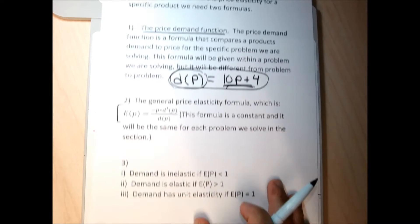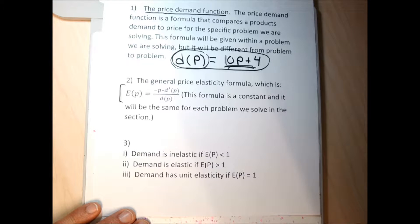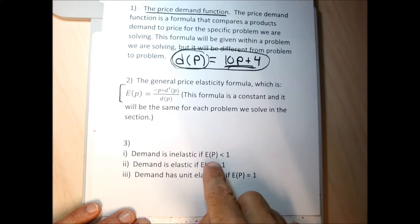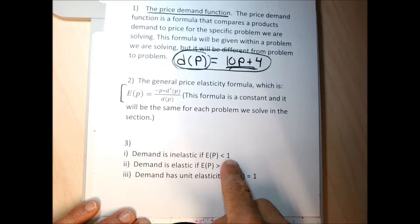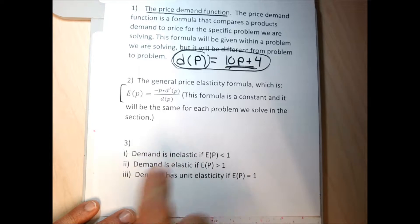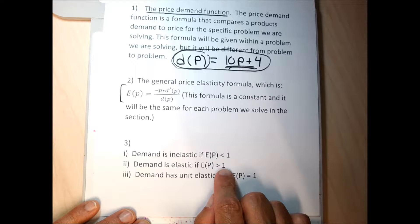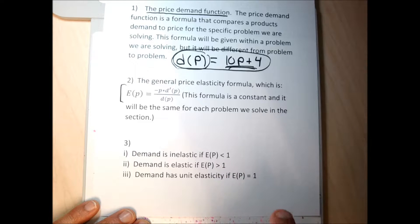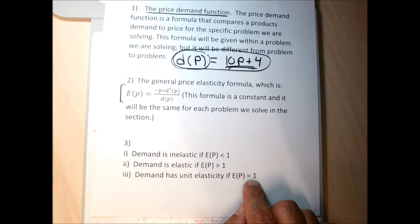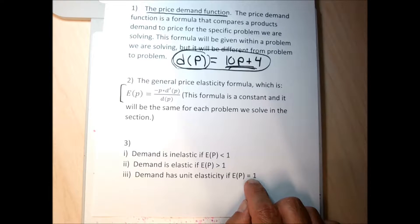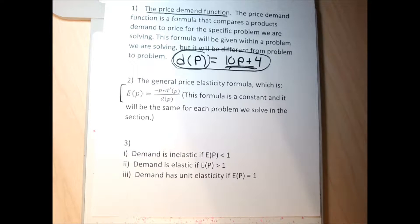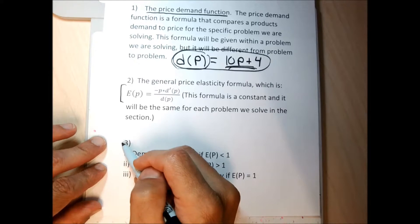We're going to crunch some numbers to figure out if demand is inelastic or elastic. If the number we get for price elasticity is less than one, demand is relatively inelastic — like for APS electricity. If the number is bigger than one, demand is relatively elastic — like demand for soda at Fry's. Relatively rarely, you can have perfect unit elasticity, which means for every percent increase in price you get that same percent decrease in demand — so a 10% price increase produces a 10% decrease in demand.